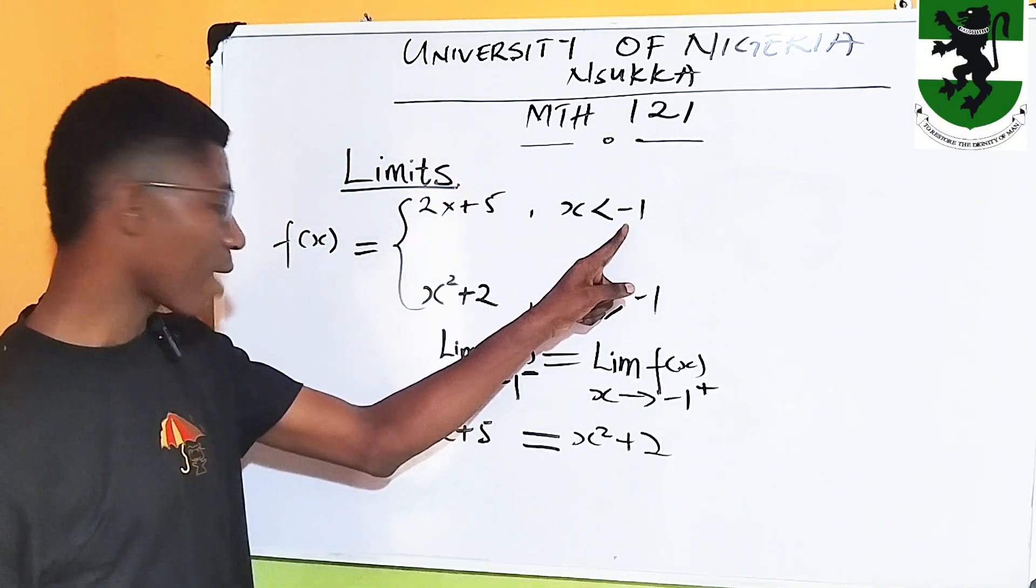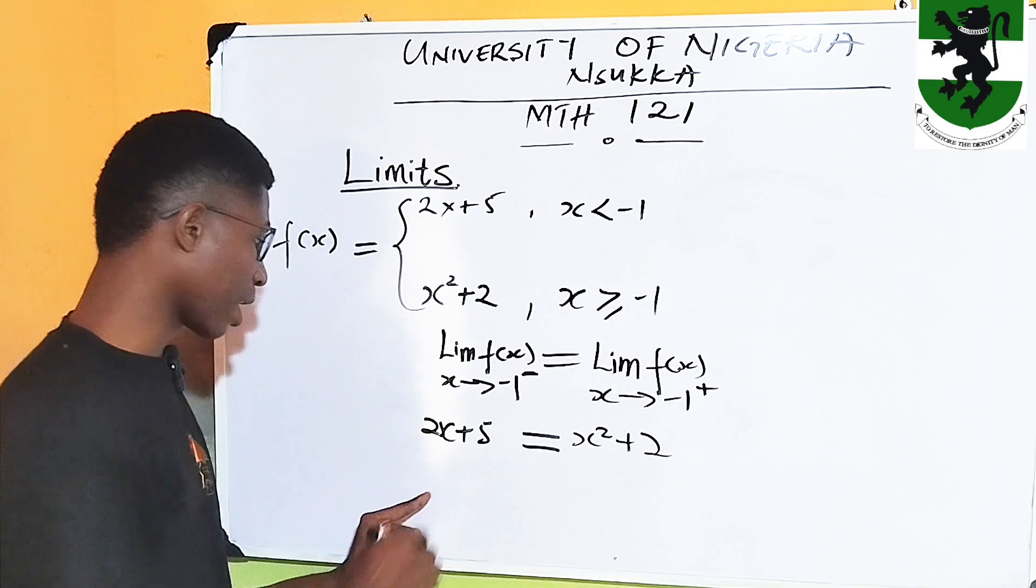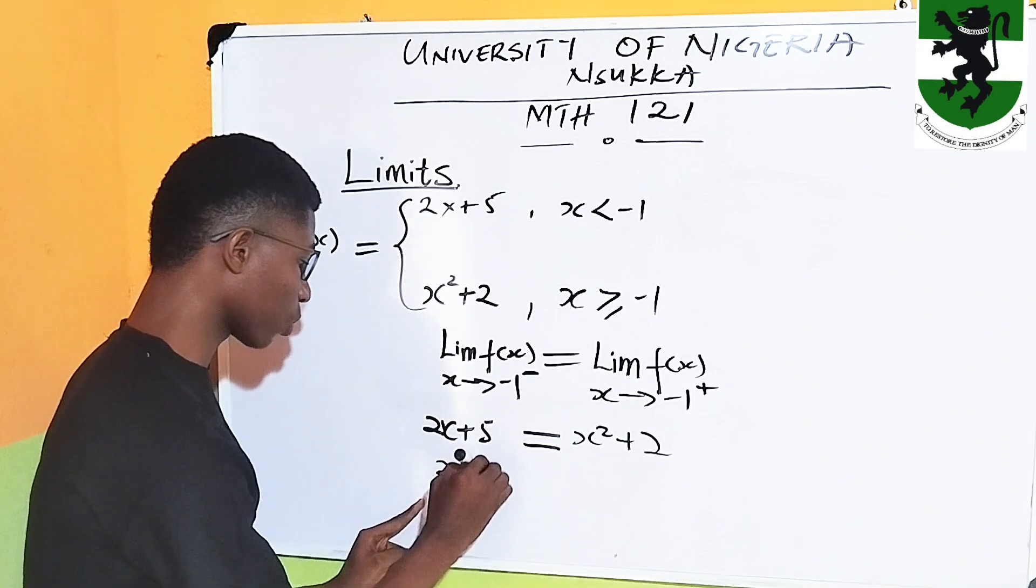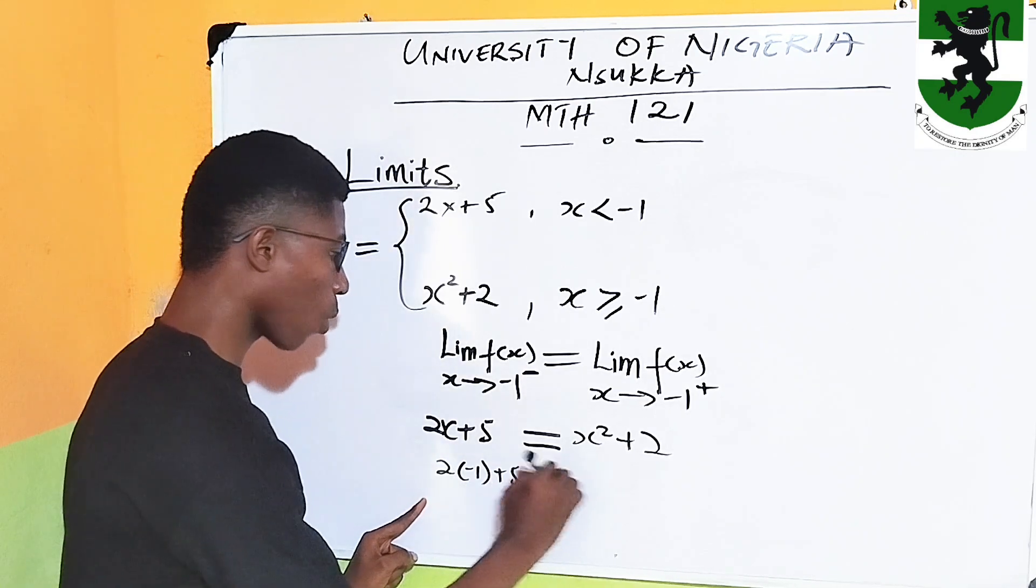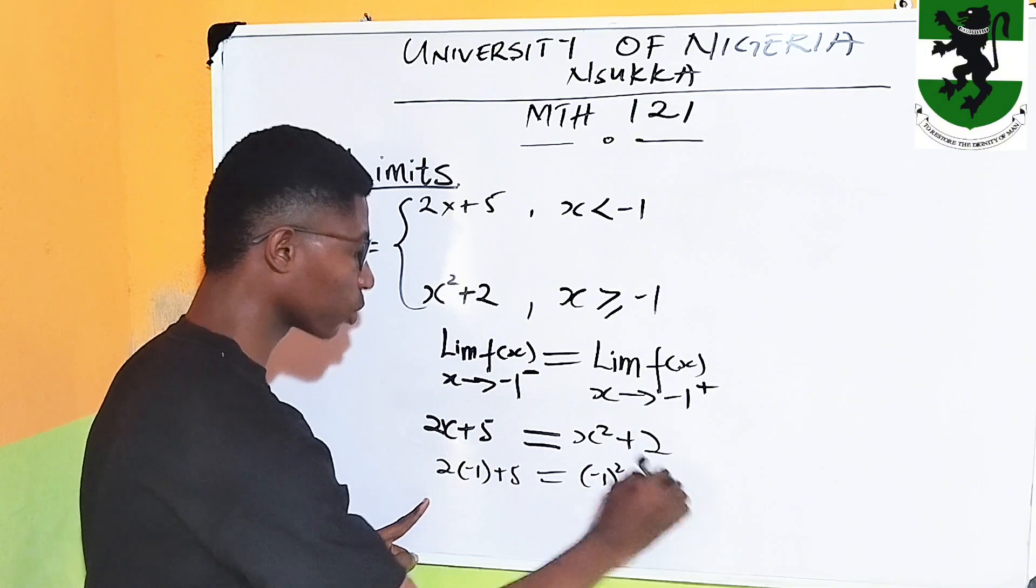The point is minus 1, right? So, for substituting minus 1 into this expression, we have 2 times minus 1 plus 5 is equal to minus 1 all squared plus 2.